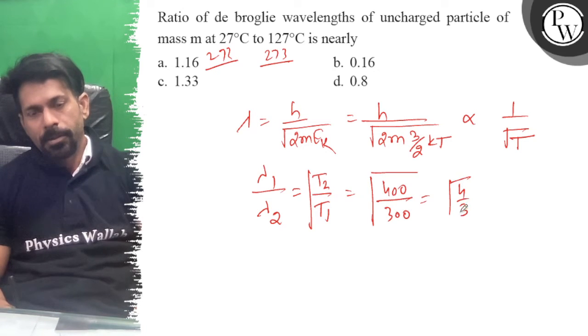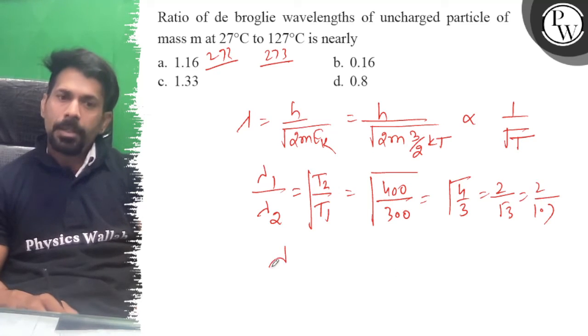That will be 4 by 3, 2 by root 3, 2 upon 1.7.